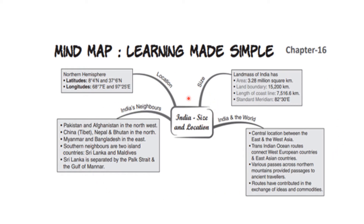We are going to learn about the location of India on the globe. When we speak about location, we will discuss the latitudinal and longitudinal extent of India. For size, we will refer to the coastline along with and without the islands, and the total land mass of India. For India and the world, we will discuss India's eminent position in the Indian Ocean. For India's neighbors, we will read about neighboring countries and their borders - those touching India and those not touching India.